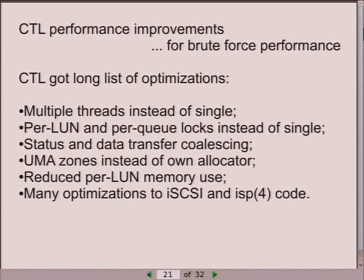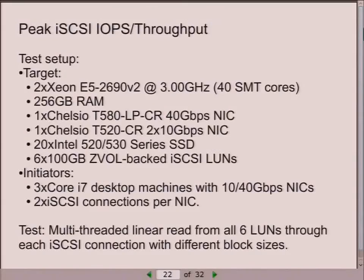CTL was also switched to use UMA zones instead of the old allocator, which gives significant benefit because UMA zones are SMP-aware and scale to large systems with many cores. There were many other optimizations for performance and memory use, and here are some benchmarks to show what CTL can do now.